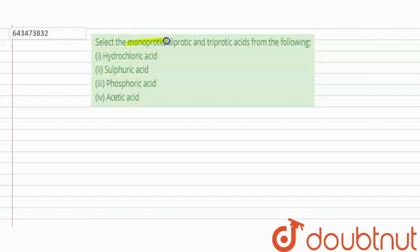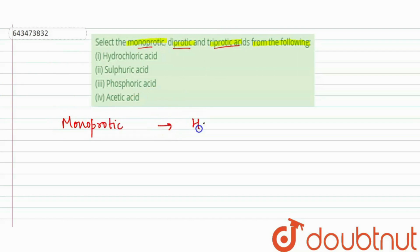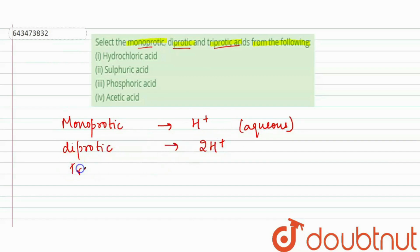The question is: select the monoprotic, diprotic, and triprotic acids from the following. Monoprotic acids are those which give one H⁺ ion in aqueous solution. Diprotic acids give two H⁺ ions, and triprotic acids give three H⁺ ions in aqueous solution.